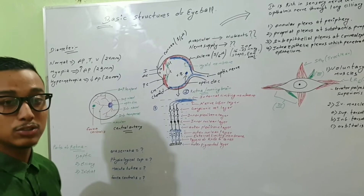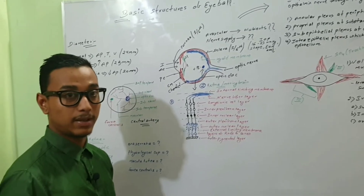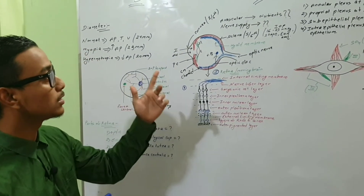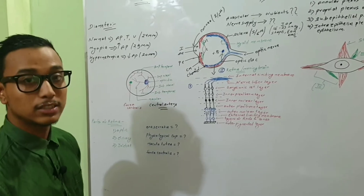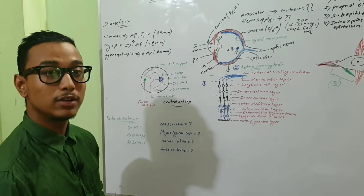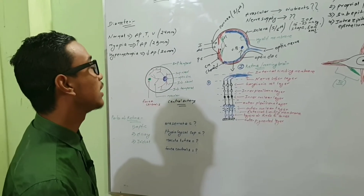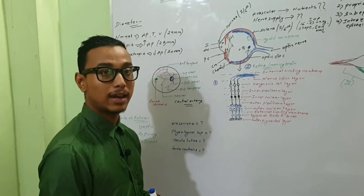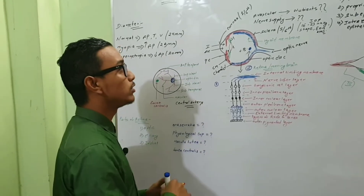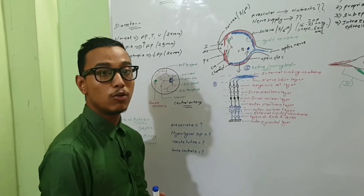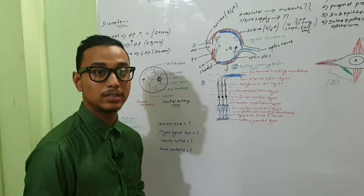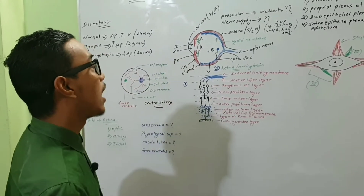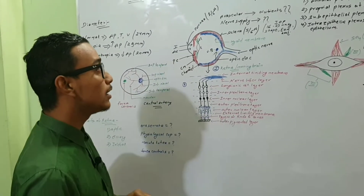The cornea is avascular and transparent. Although it is avascular, it still receives nutrient supply — from lacrimal secretion from the lacrimal glands, aqueous humor, and also from the capillary loops at the corneoscleral junction.